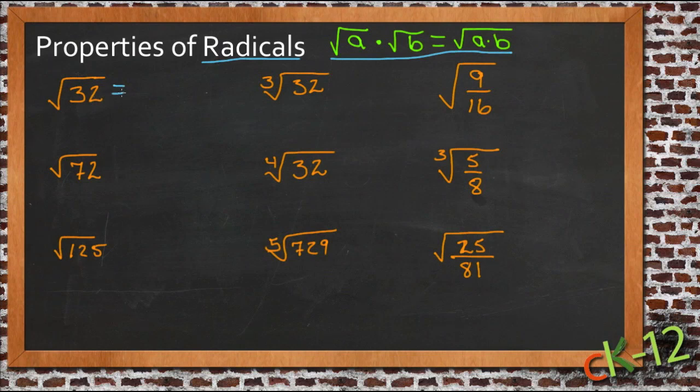But we don't know where. But 32 could be written as, this square root of 32 could be written as the square root of 16 times 2, because 16 times 2 is obviously 32.